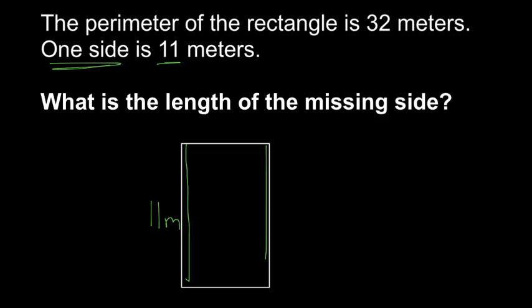And because we know that this side is 11 meters, we also know that this side is 11 meters. On a rectangle, opposite sides are equal. So those two we know, but what we don't know are this top and the bottom. Those are the missing sides.